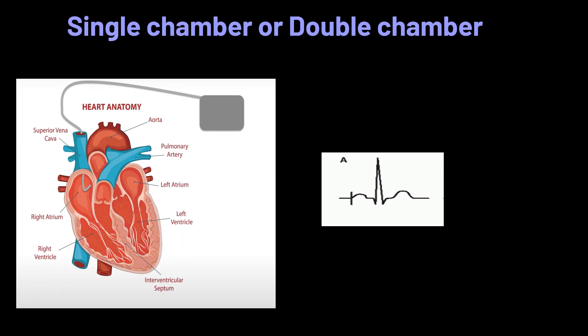Another important concept is single chamber versus dual chamber pacing. For single chamber atrial pacing, the wire is placed in the atrium. On ECG, we see a pacing spike followed by a P wave. Single chamber atrial pacing is contraindicated if there is AV conduction block, because the atrium will contract but there will be no transmission to the ventricle. Atrial pacing also will not work in the presence of atrial fibrillation, especially if it is a chronic condition.